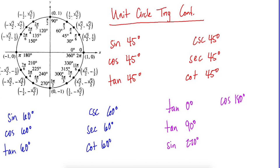Going through the unit circle, we can find all kinds of angles. The main angles we focus on are 30, 45, 60, and the quadrant angles: 0, 90, 270, 180. I want to focus on cosecant next.